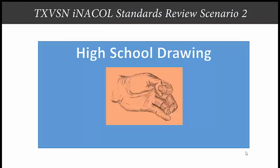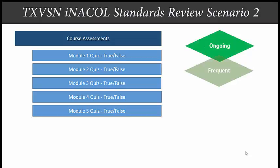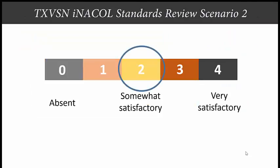You're reviewing a high school drawing course. The course contains 5 modules with a true-false quiz at the end of each. While this is certainly ongoing and frequent assessment, it is not varied. This course would likely earn a rating of 2 — somewhat satisfactory — as the assessments are present but inadequate to gauge mastery for this particular course in drawing.